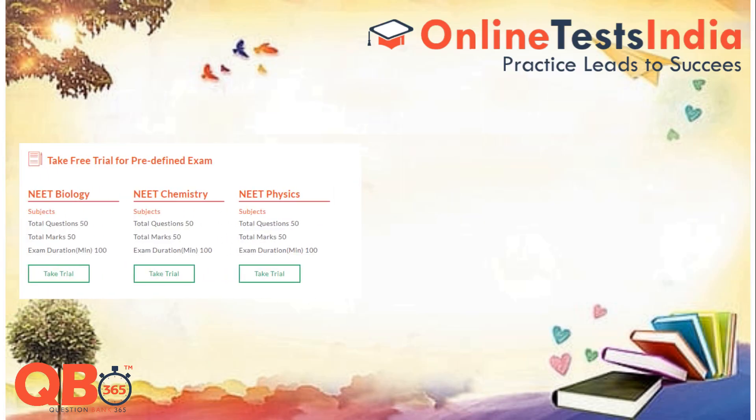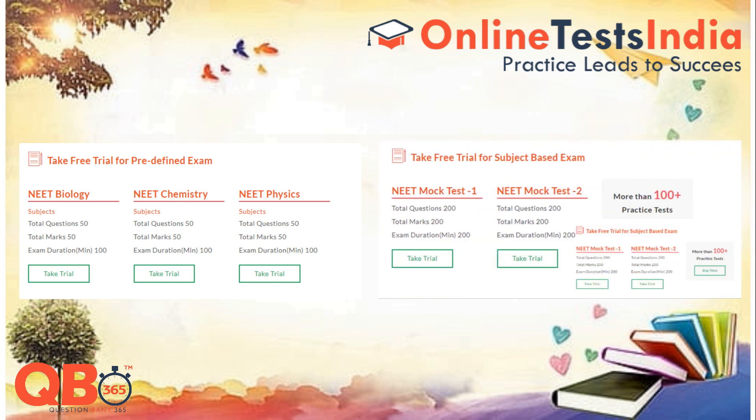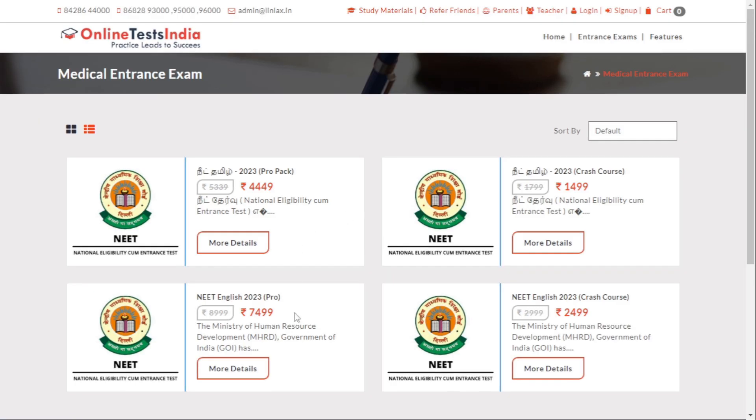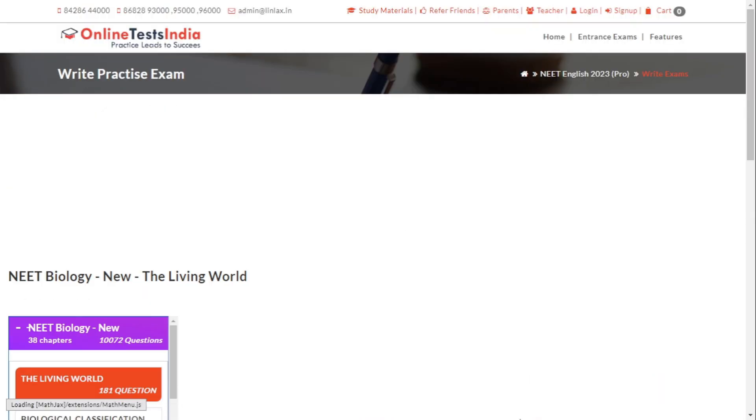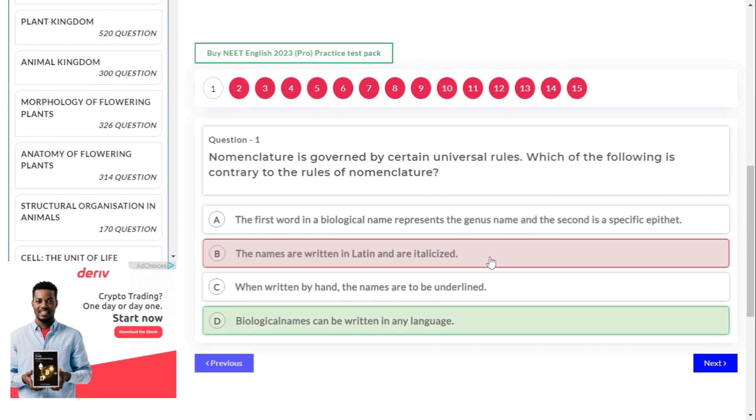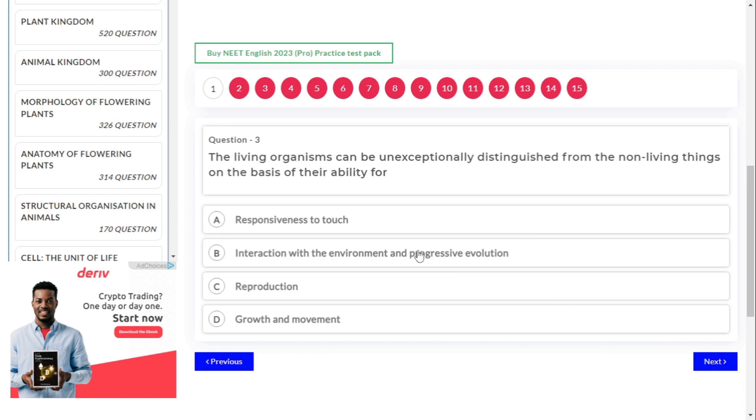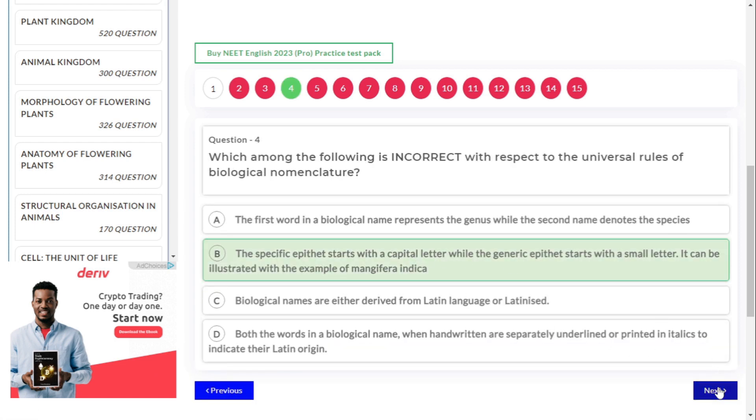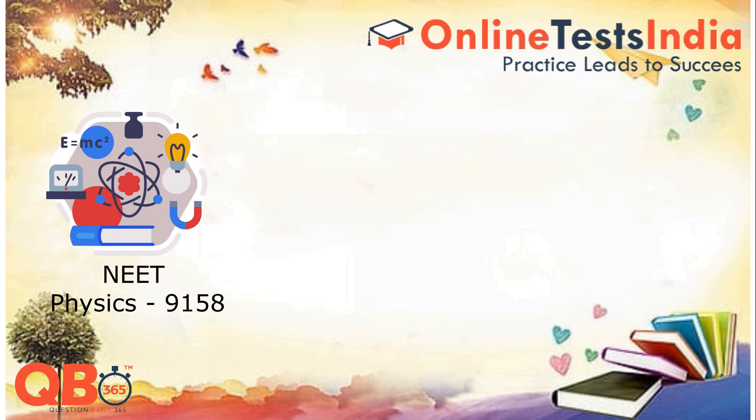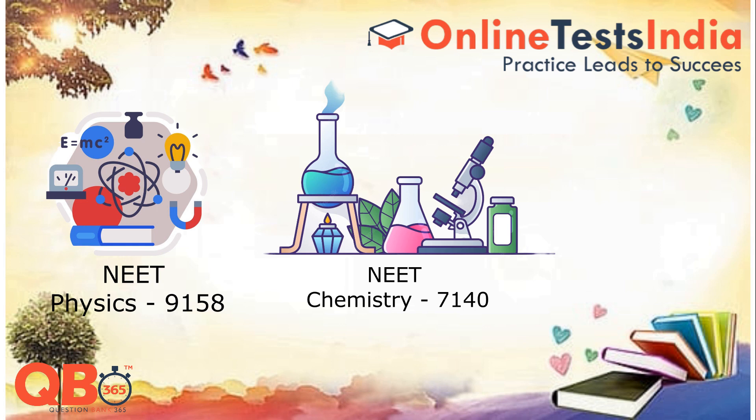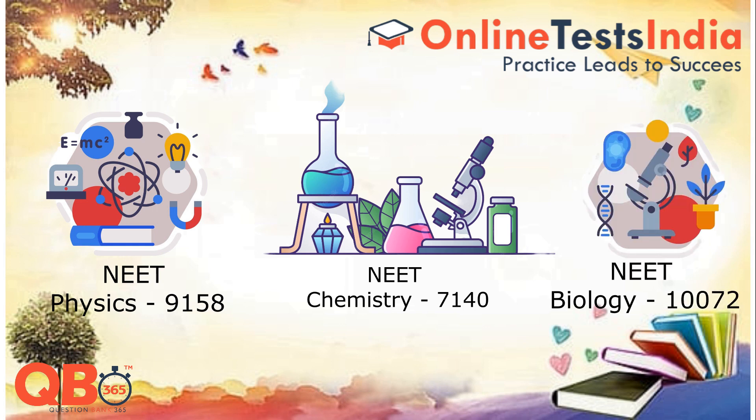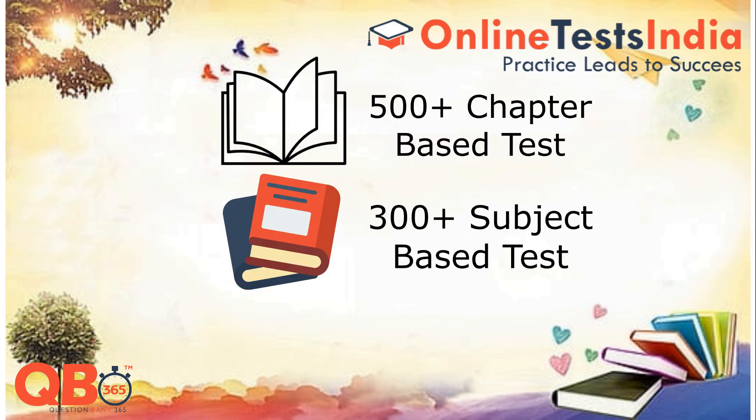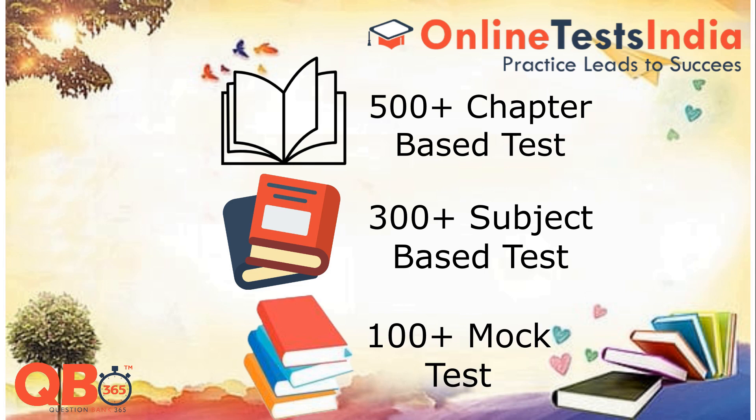We, Online Test India, are providing for NEET preparing students all chapters chapter-based test, subject-based test, mock test and free trial test. Just visit our official website onlinetestindia.com and take a trial test. We are providing 500 plus trial tests. In online test series, we are providing 9,158 questions with answers in Physics, 7,140 questions with answers in Chemistry, and 10,072 questions with answers in Biology. Totally 26,370 questions with detailed solutions, 500 plus chapter-based tests, 300 plus subject-based tests, and 100 plus mock tests also we are providing. Website link and pack details are given in the description.